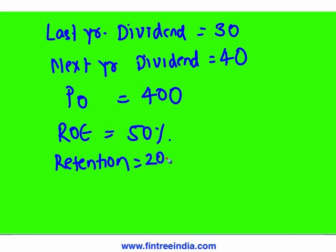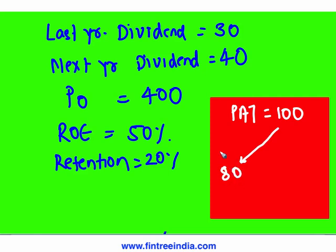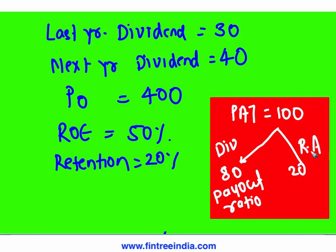First let's understand the meaning of retention ratio. Say a company has made profit after tax of 100. It's not compulsory to pay all the profit as dividend. If the company pays 80 out of 100, then payout ratio is 80 percent and retention ratio is 20 percent — that 20 percent is the retained earnings portion.